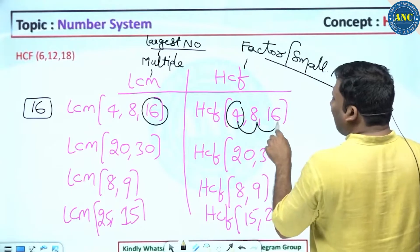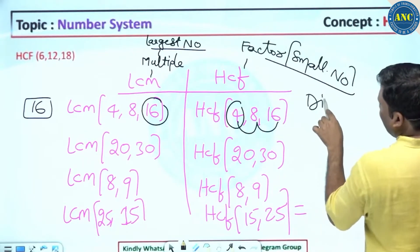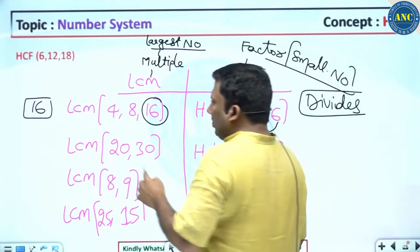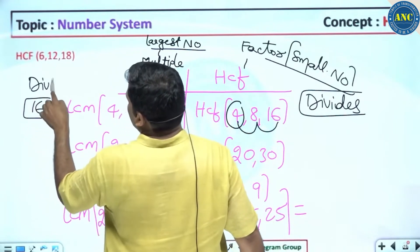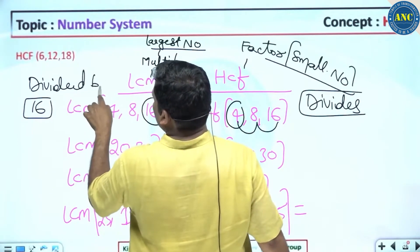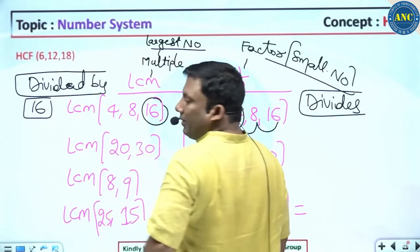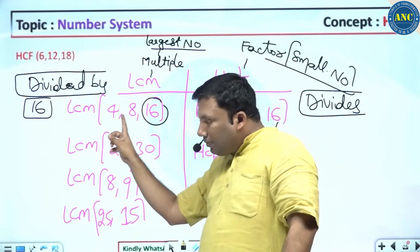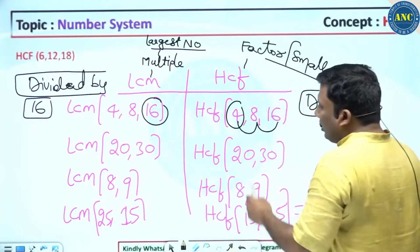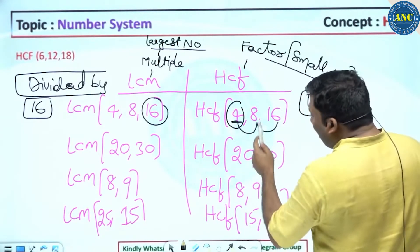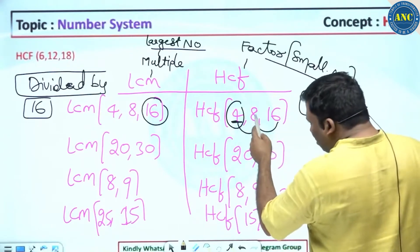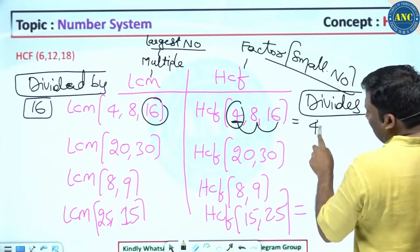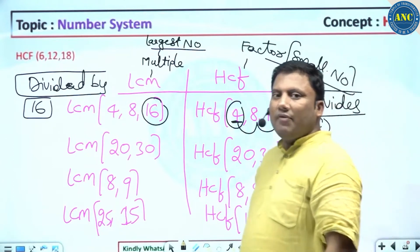For HCF, take the smallest number. If the smallest number divides every other number, it is the HCF. Remember: a factor divides. LCM — multiple means the largest number, and the largest number should be divisible by every other number. HCF — the smallest should divide every other number. Four will divide 8, four will divide 16 — so HCF is 4. I hope the idea is clear.